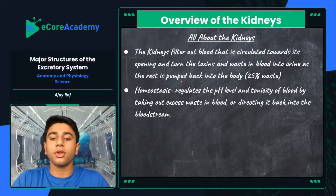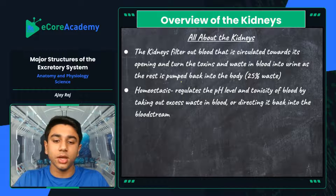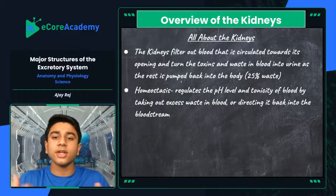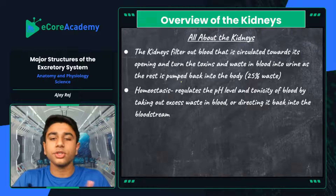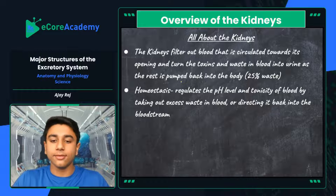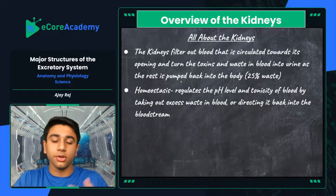Another very important function of the kidneys is their major involvement in homeostasis — the process in which they regulate the pH level and tonicity of blood by taking out excess waste or directing it back into the bloodstream. They regulate your pH (potential hydrogen) level, which controls the acidity of your blood. Too much or too little acidity makes your blood toxic. The kidneys also control tonicity — the salt concentration of the blood — to prevent blood cells from shriveling or swelling. They can also reabsorb essential nutrients like glucose and sugar back into the body.